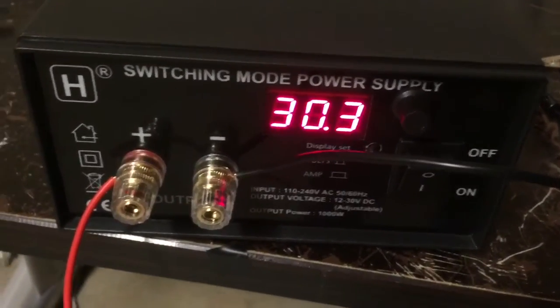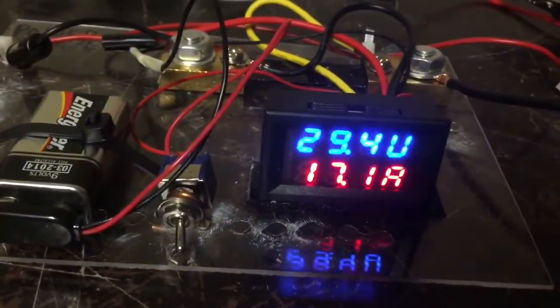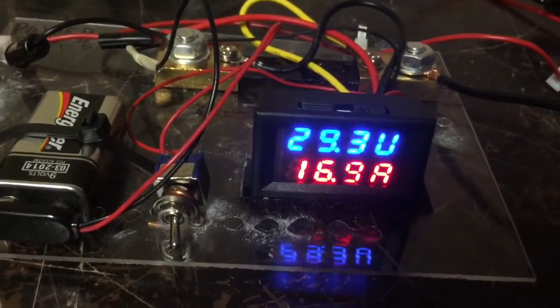In prior videos with this particular induction heater, which is the large one that I put together recently, I was unable to melt a metal at 30 volts. I could melt it easily at 60 volts, but not at 30 volts.